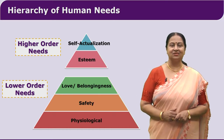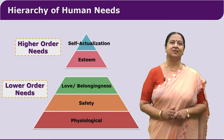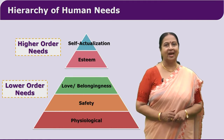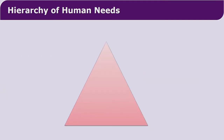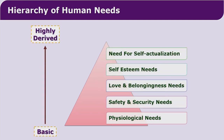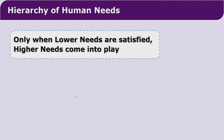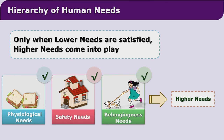After satisfying all these lower order needs, we think of esteem needs, and then comes the need for self-actualization. These are classified by Maslow as higher order needs. The physiological needs, safety and security needs, and love and belongingness needs are lower order needs, whereas self-esteem needs and the need for self-actualization are highly derived needs. Only when we satisfy the lower order needs do we think of satisfying the next higher order needs, as per Maslow.